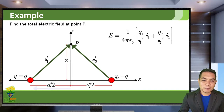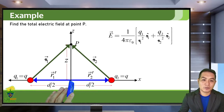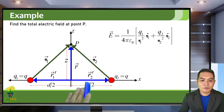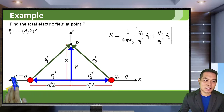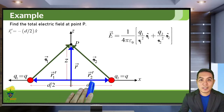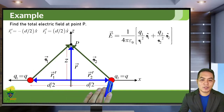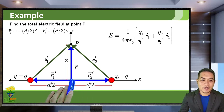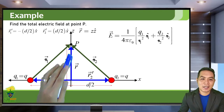We will first find the position vectors of our source points. R1 prime, the position vector of Q1, is negative d over 2 x hat — it's in the negative x-axis direction with length d over 2. R2 prime, the position vector of Q2, is d over 2 x hat — magnitude d over 2 in the positive x hat direction. The field point position vector R is just Z z hat.